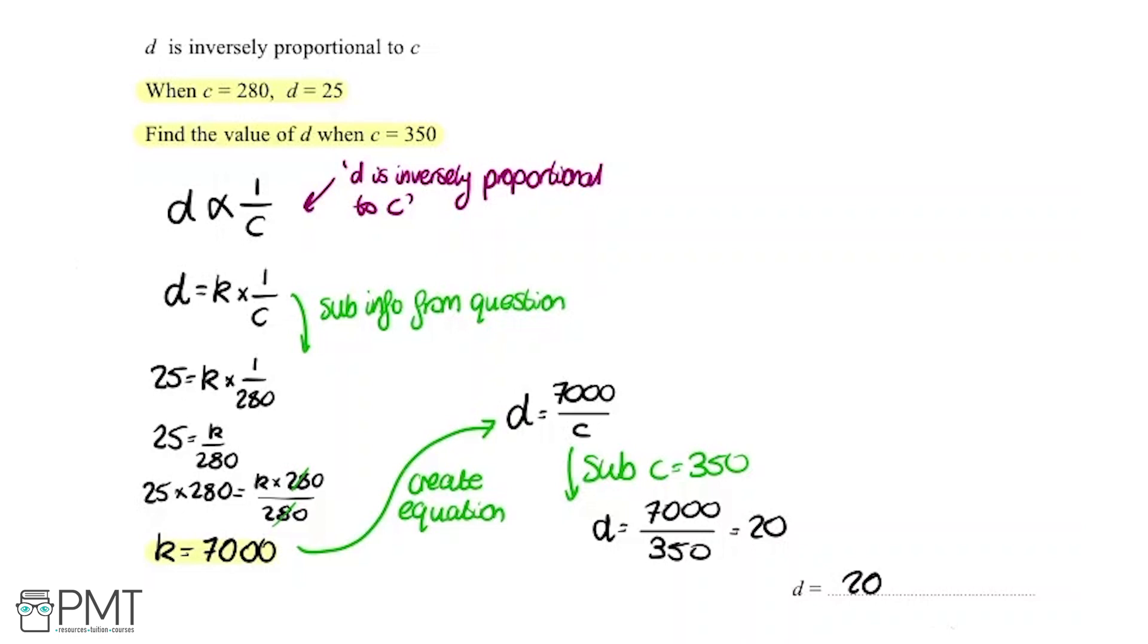So you get one mark here for creating our link between D and C and subbing in these values with our constant here, K. We get our second mark over here for finding out that K is 7,000 and substituting C equals 350 to create this. Then we get a final mark that through all of that we work out the correct answer of D being 20.